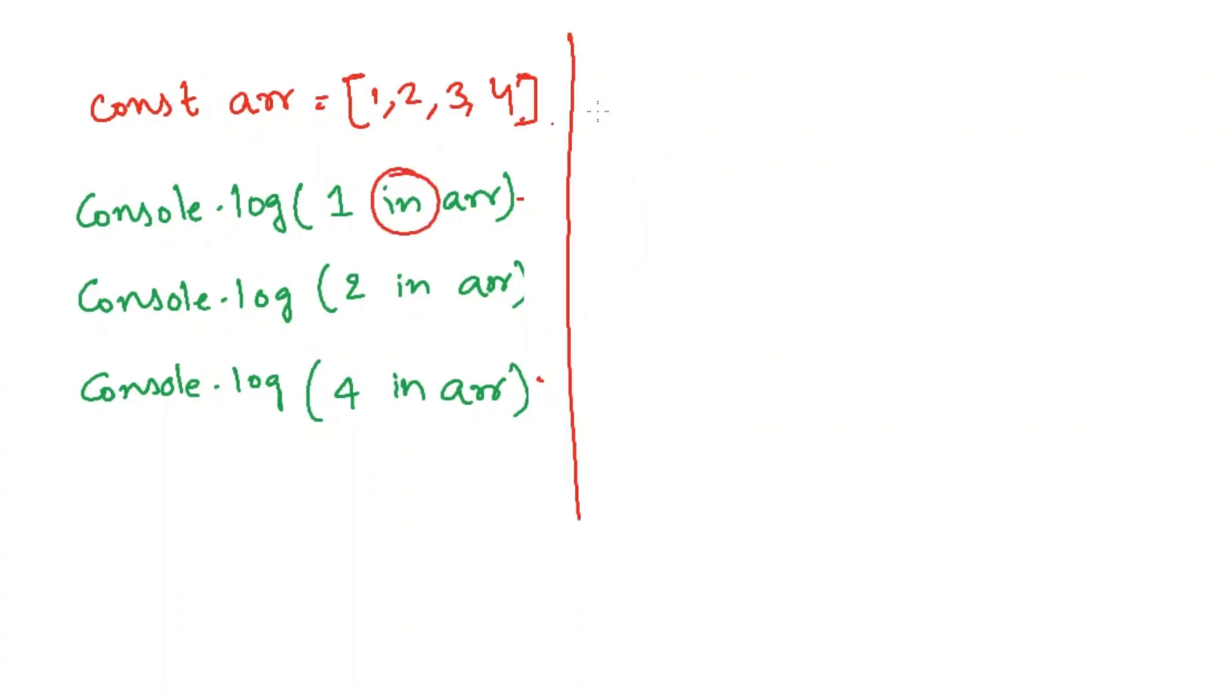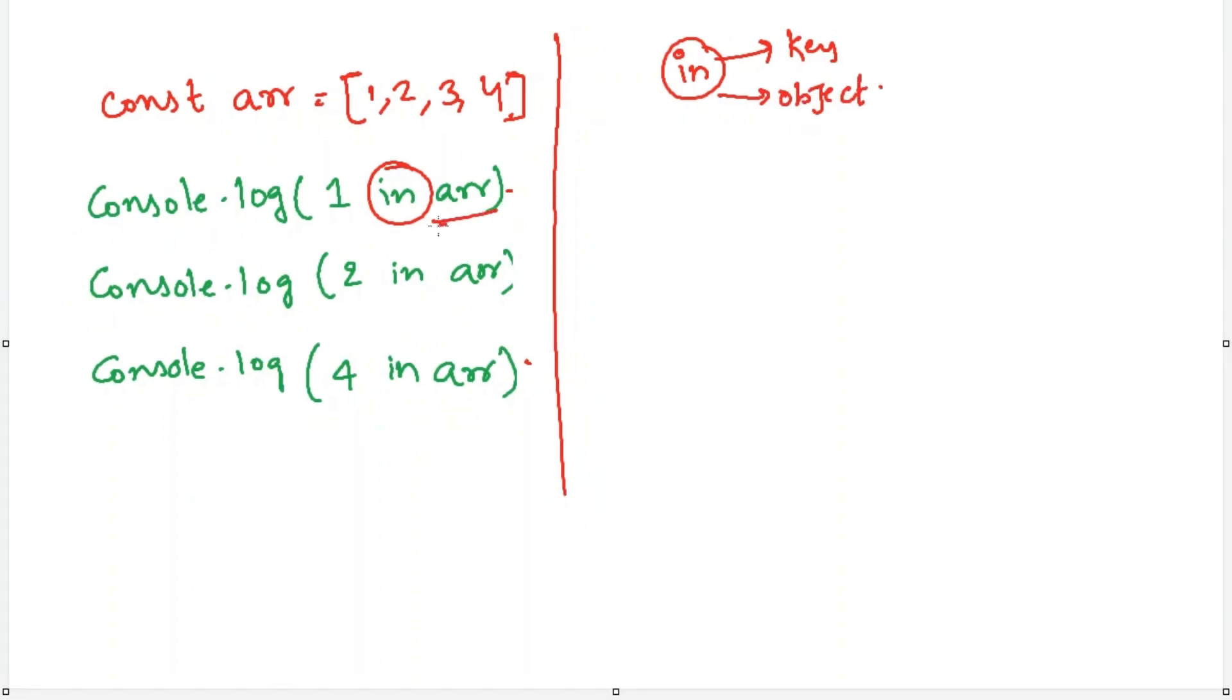Here we are using in operator. So in operator in JavaScript is used to check whether the key is present in the object or not. Hey, wait. We are using array, but you are explaining about object.